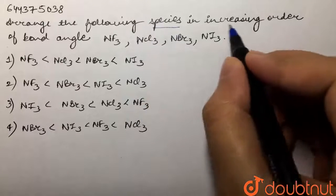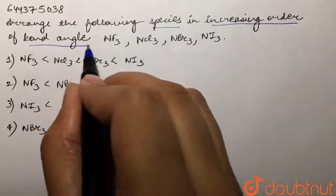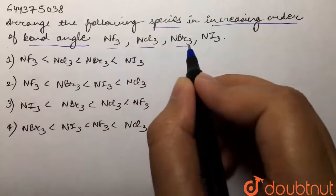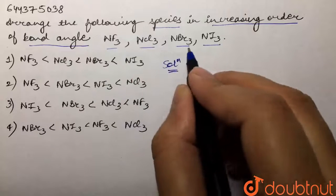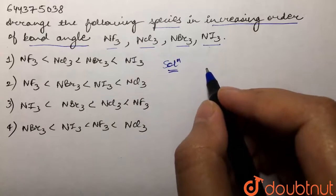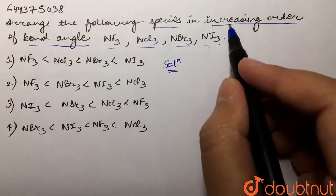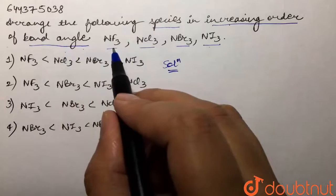Our question is: arrange the following species in increasing order of bond angle: NF3, NCl3, NBr3, and NI3. Now, over here we are given these four species and we are supposed to tell the correct order for the increasing order of bond angle in them.